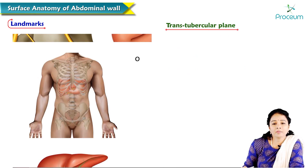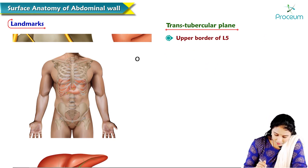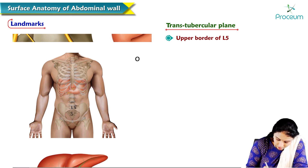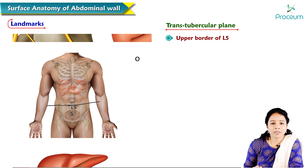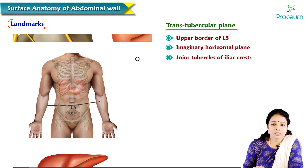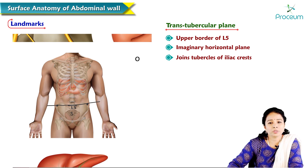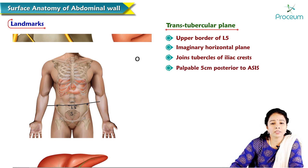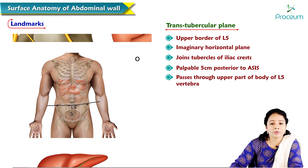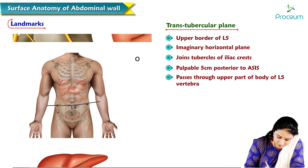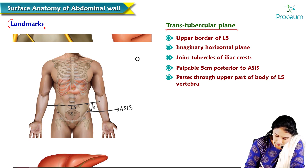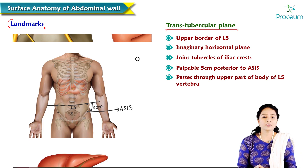The transtubercular plane corresponds to the upper border of the L5 vertebra. It is an imaginary horizontal line joining the tubercles of the iliac crests. These tubercles are palpable 5 cm posterior to the anterior superior iliac spines, and the plane passes through the upper border of L5 vertebra. That is how we locate the transtubercular plane.